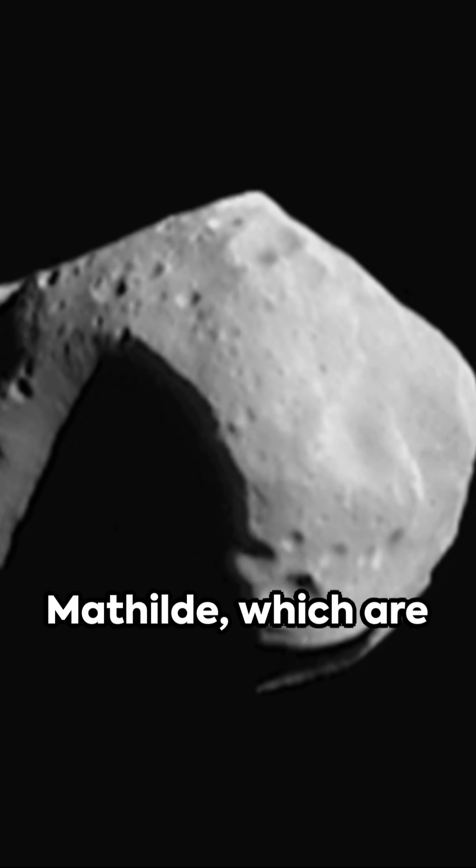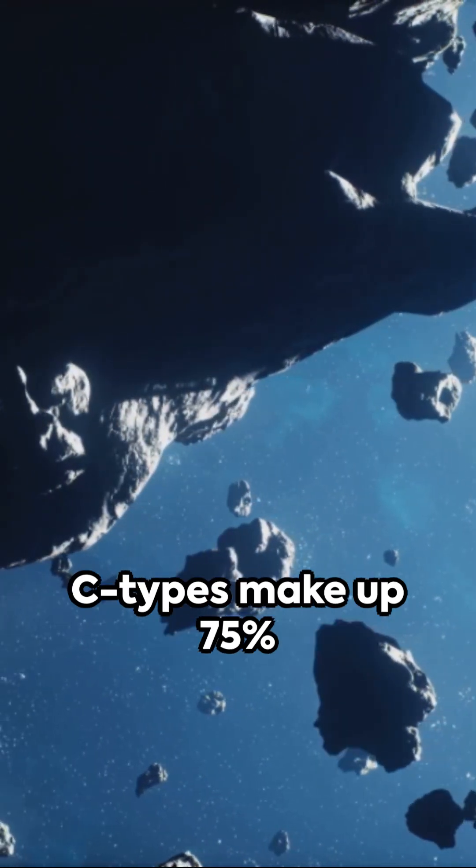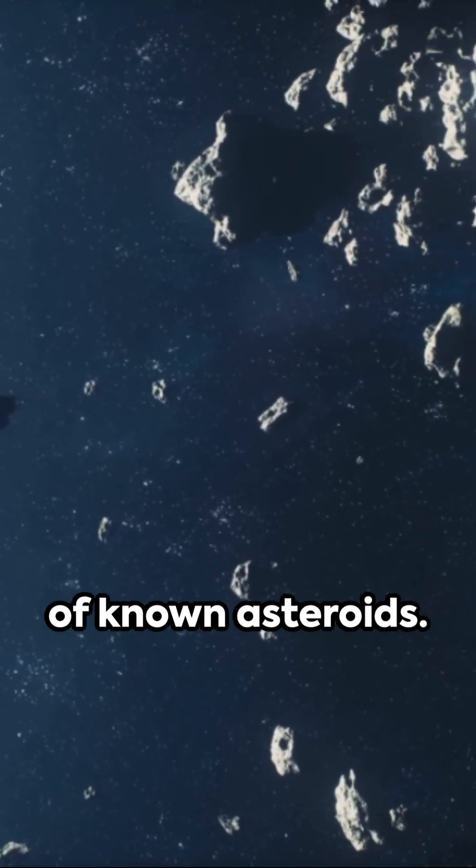First are the C-types like 10 Hygiea and 253 Matilda, which are dark and carbon-rich. Holding the secrets of the solar system's birth, C-types make up 75% of known asteroids.